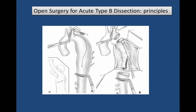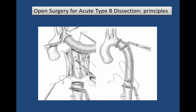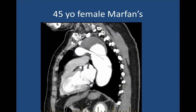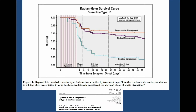Open surgery for acute dissection essentially means a left thoracotomy, proximal and distal clamping, opening the aorta, opening the dissection flap, and sewing a synthetic or prosthetic graft proximally and distally to redirect flow down the true lumen. These procedures are generally done with circulatory support such as atrial-femoral bypass. Sometimes when the dissection is very high and involving the arch, we perform the procedure under circulatory arrest through the left chest — that was a Marfan syndrome patient.